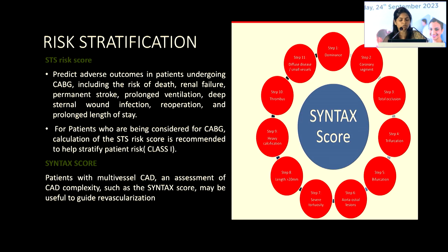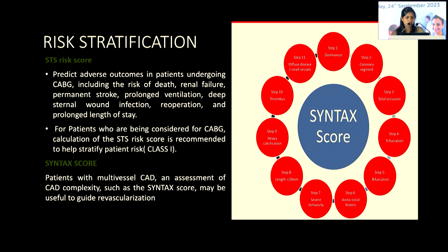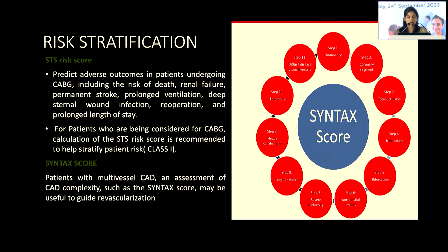Coming to risk stratification, we have two risk scores. The STS risk score tells us the risk of surgery — whether it's less than 4%, 4–8%, or more than 8%, which would be high risk. And then the SYNTAX score, which is commonly used in multivessel disease to classify the risk when the patient goes for PCI.